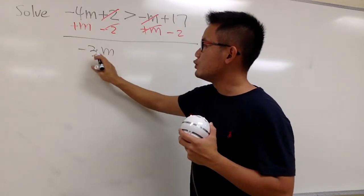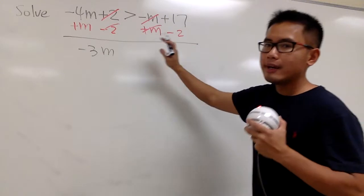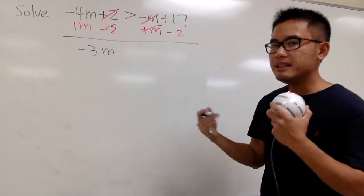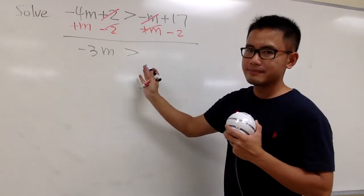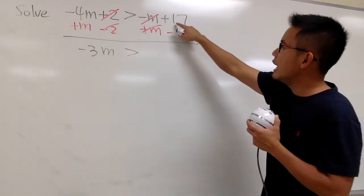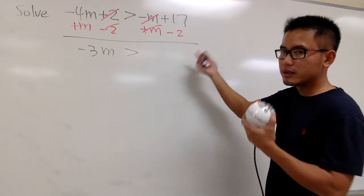And since we didn't multiply, or we didn't divide any negative number, the symbol greater than stays the same, like this. And now, here we have the positive 17 minus 2. Work that out, we get 15.